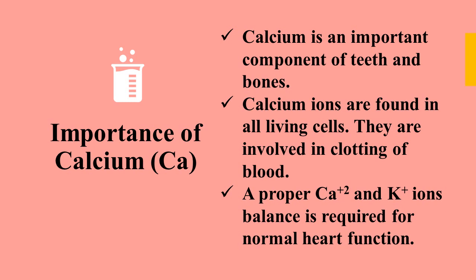Importance of calcium: calcium is an important alkaline earth metal. It is present in our teeth and bones and is important for their growth. Calcium ions are found in all living things and are involved in the clotting of blood — when there is a wound, blood clotting requires calcium ions. A proper calcium and potassium ion balance is also required for normal heart function.